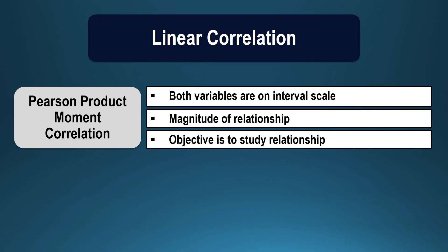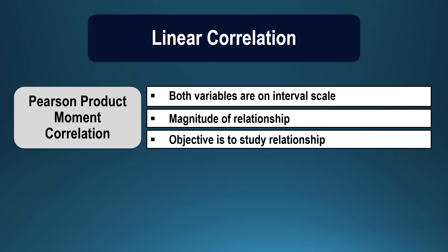Linear correlation is also part of descriptive statistics, and the purpose is to establish the degree of association between two variables. When your purpose is to determine the relationship between two variables available on the interval scale, then Pearson product-moment correlation can be worked out. In the next part of the program, we will try to understand the normal probability curve.